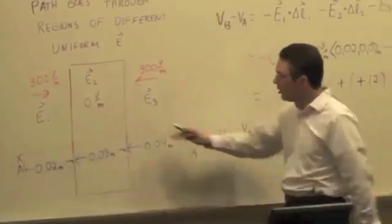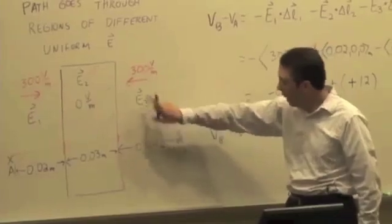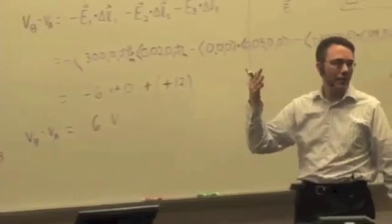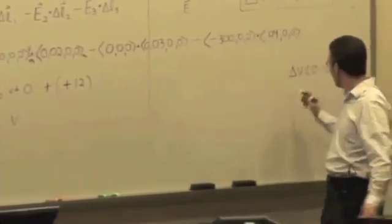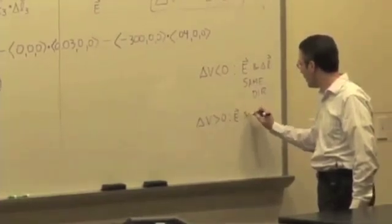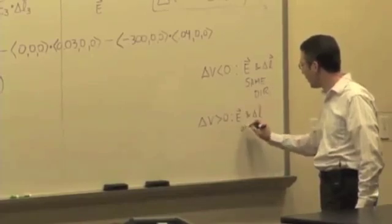Go through here, you get zero. But now you're going in the opposite direction of the electric field, so the potential on that side should be positive. So delta V is greater than zero if the electric field and delta L are in the opposite direction.